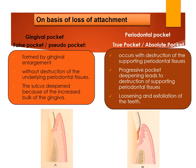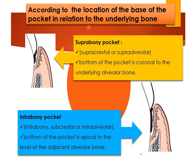Next, classification based on the location of the base of the pocket in relation to the underlying bone. The first type is the suprabony pocket — as the name indicates, it is situated above the bony crest, also called supra-crestal or supra-alveolar; the bottom of the pocket is coronal to the underlying alveolar bone. The second type is the intrabony pocket — otherwise called infrabony, sub-crestal, or intra-alveolar pocket — in which the bottom of the pocket is apical to the level of the adjacent alveolar bone.